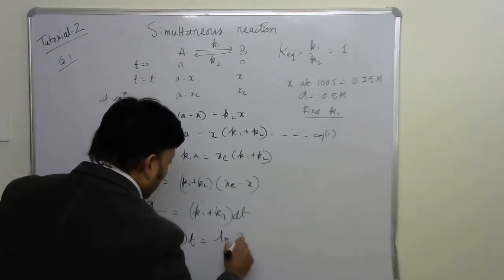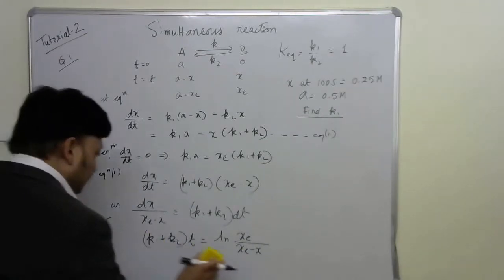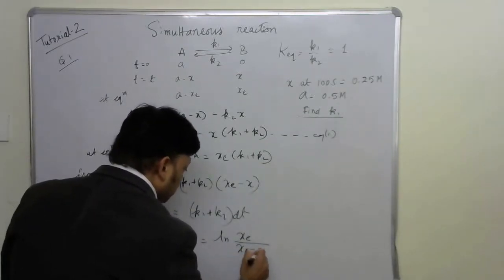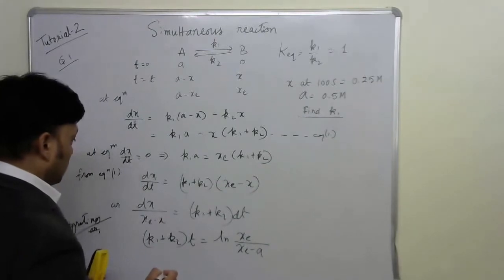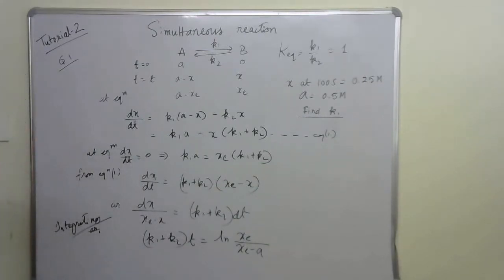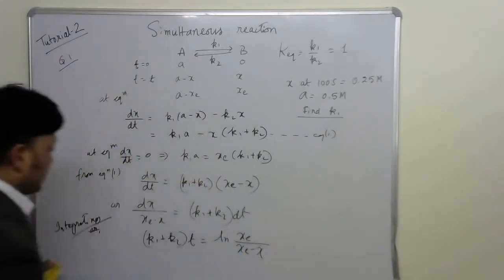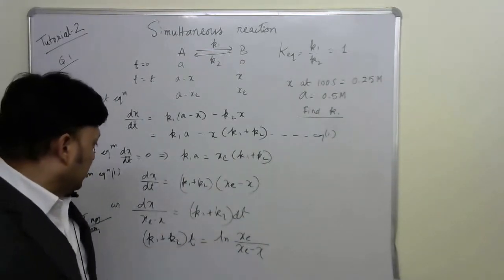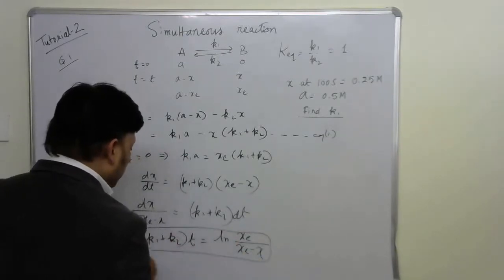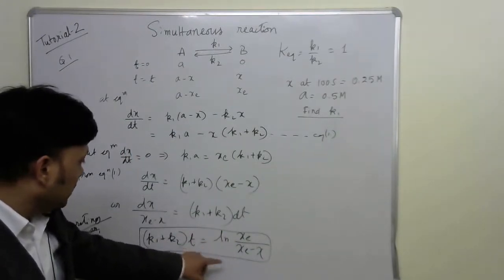The final integrated form is: ln(x_e / (x_e minus x)) equals (K1 plus K2)·t. We have successfully established a relationship between K1, K2, t, and x.